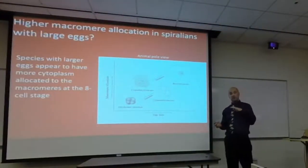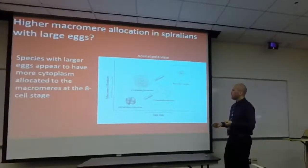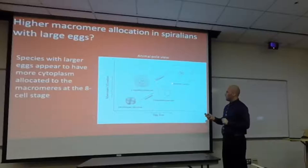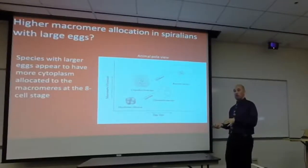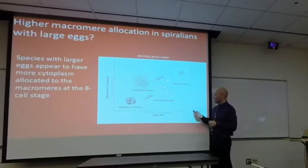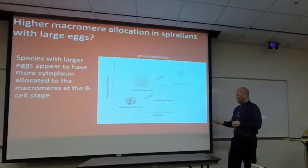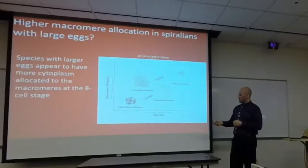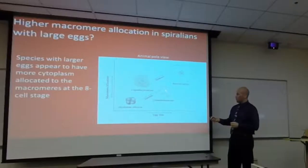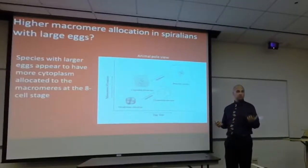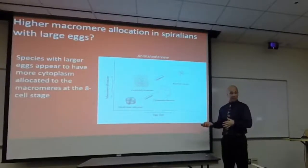The anecdotal evidence associated with the change in larval feeding suggests that in species with larger eggs, there is relatively more volume in the macromeres — a higher macromere allocation. In a gastropod example, Crepidula fornicata has smaller eggs than Busycon, but Busycon's macromeres are relatively much larger. In an annelid example, smaller-egg species have macromeres barely distinguishable from micromeres, while larger-egg species have relatively larger macromeres. There seems to be a possible association between macromere allocation and egg size.